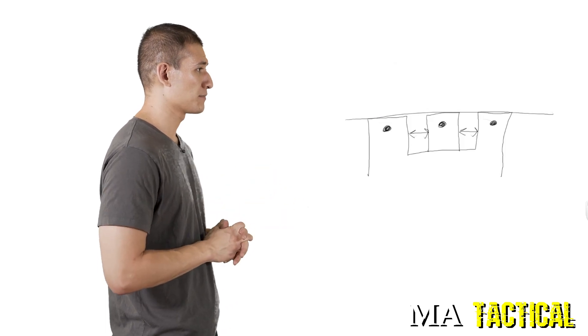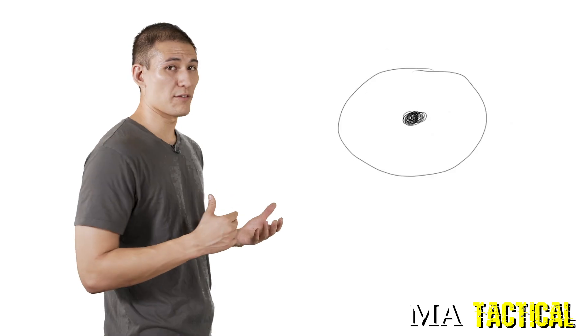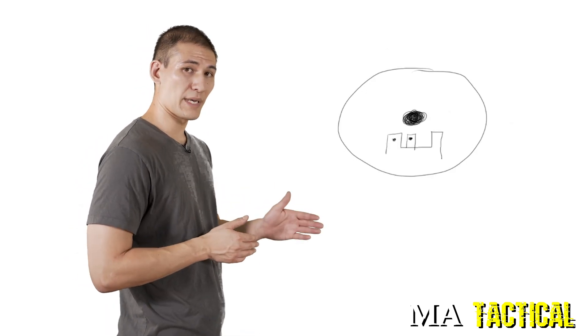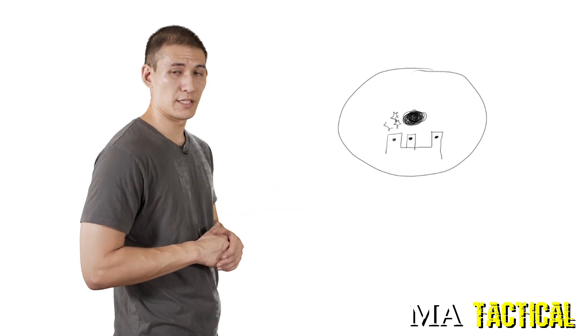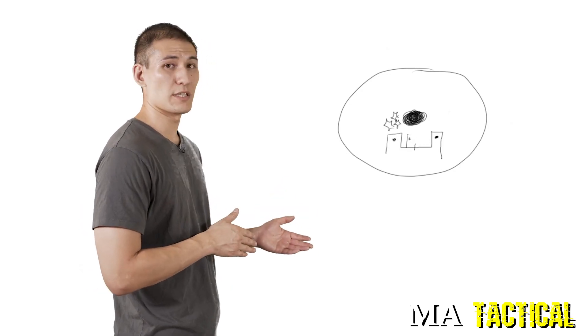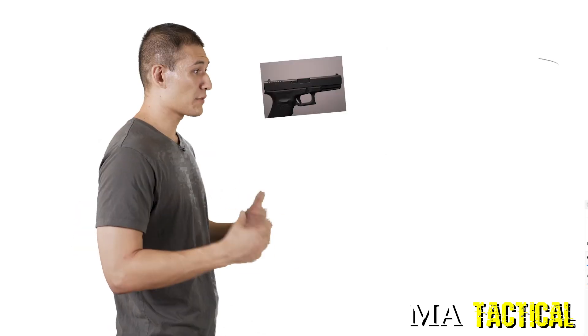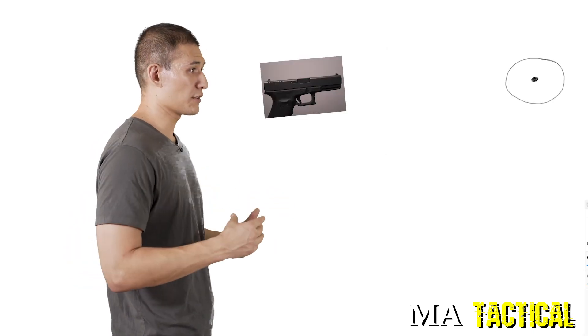Now, real quickly, some common problems that you can have: if your front sight post is off to the left, you're going to notice your round impacts are going to impact to the left of the target. Same thing if the front sight post is to the right of the rear sight, they're going to have rounds impacting to the right of the target.